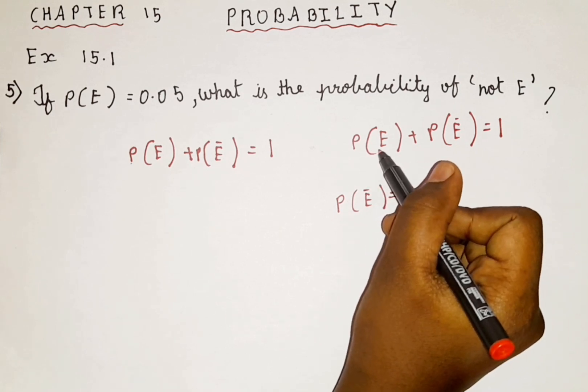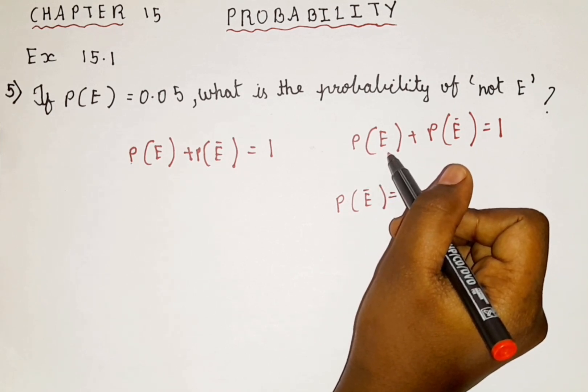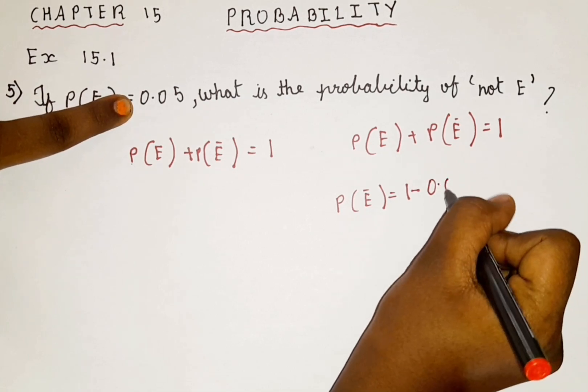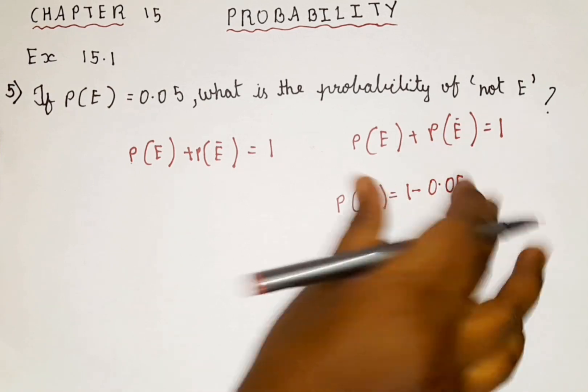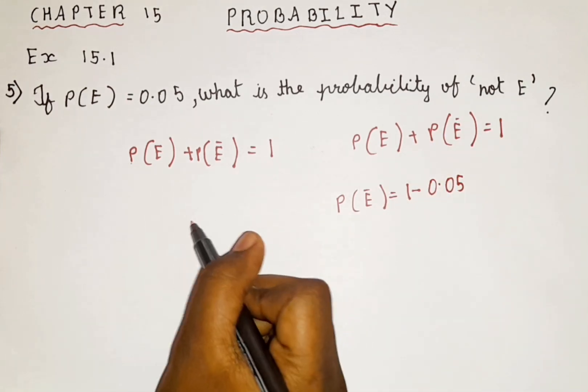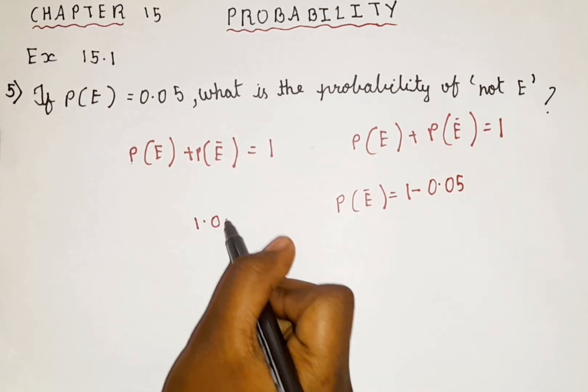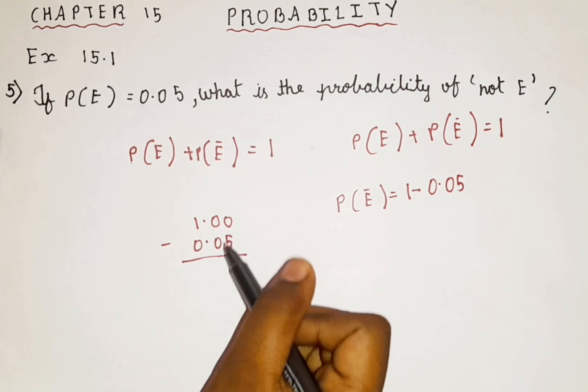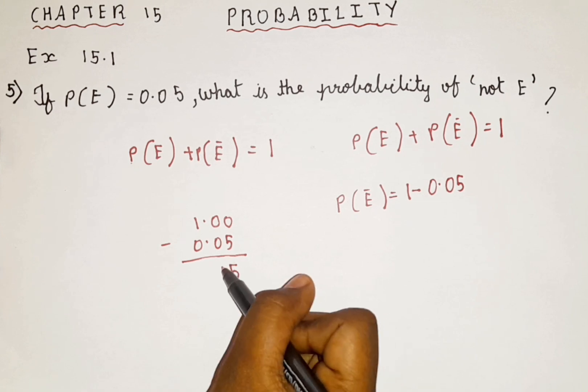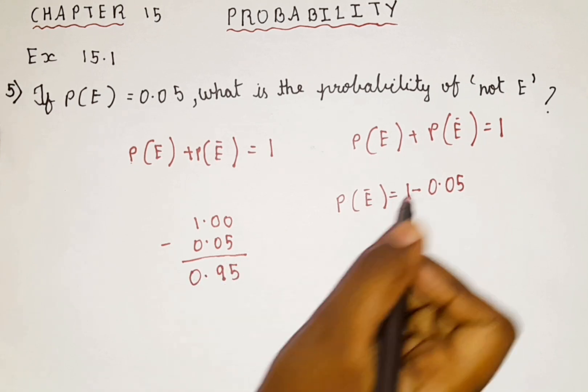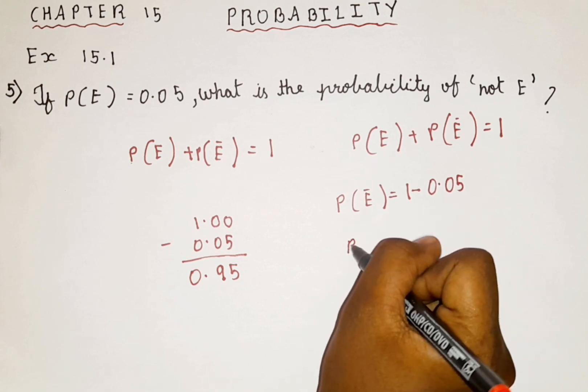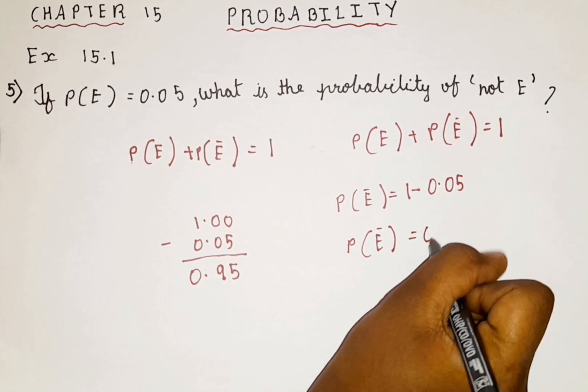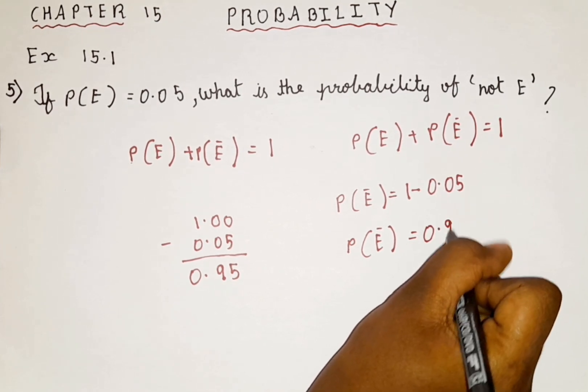So what is the formula? Probability of an event, not the formula, I am sorry, the value. The value is 0.05. So I am applying the value here. So 1 minus 0.05. So here probability of not an event is equal to 0.95.